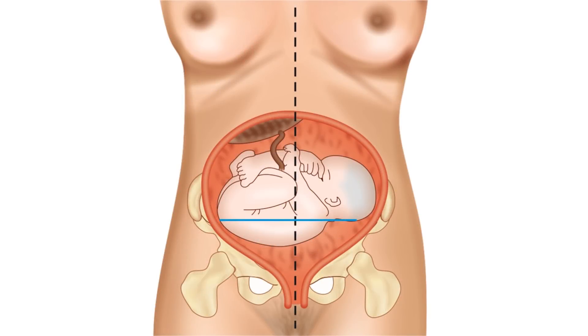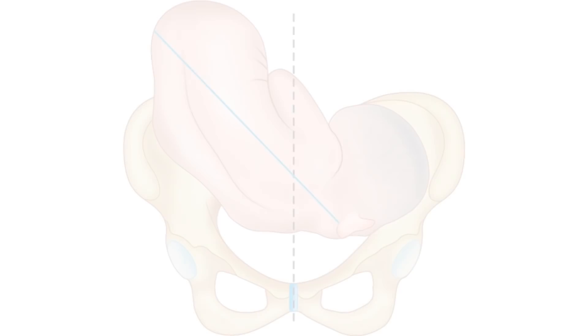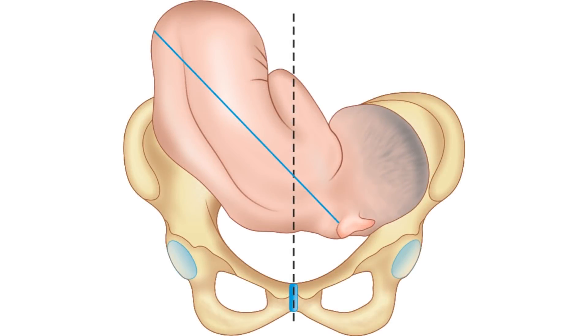The fetal lie can be described as transverse when the maternal and fetal long axes are perpendicular to each other. The fetal lie can be described as oblique when the maternal and fetal long axes cross each other obliquely, or at an angle of 45 degrees.